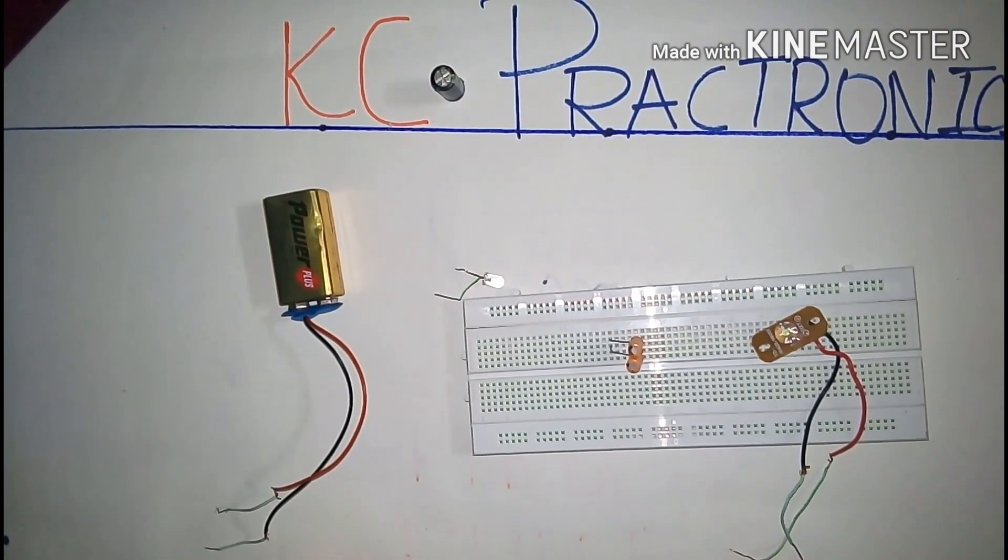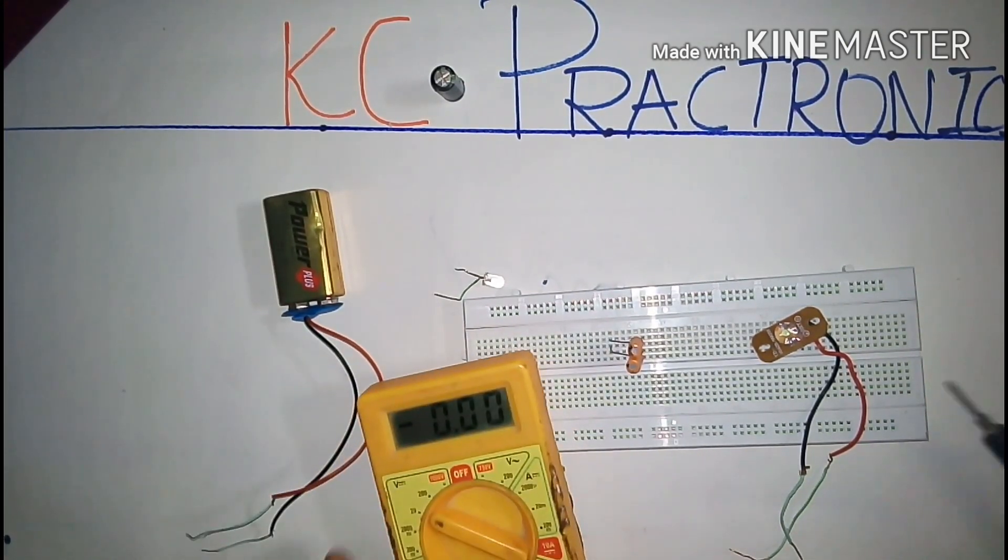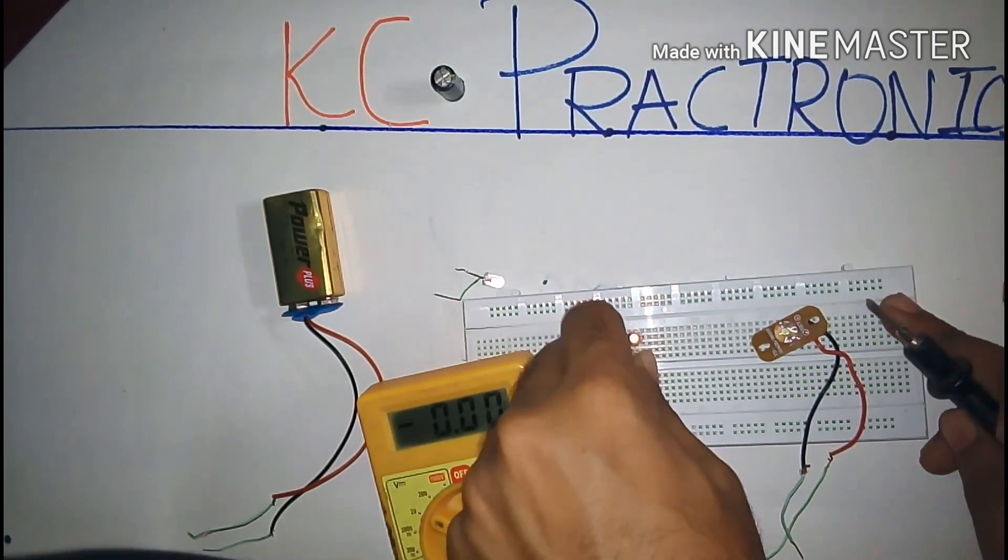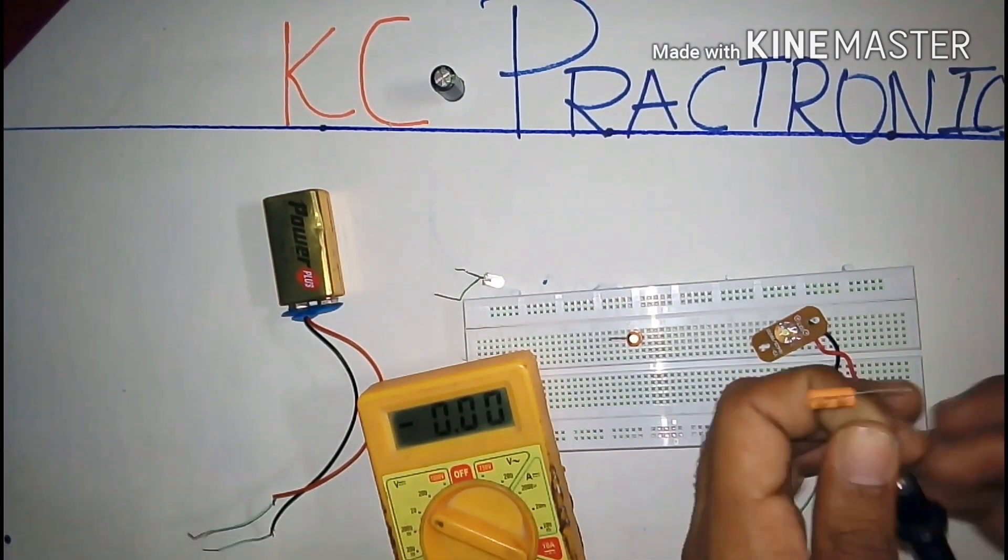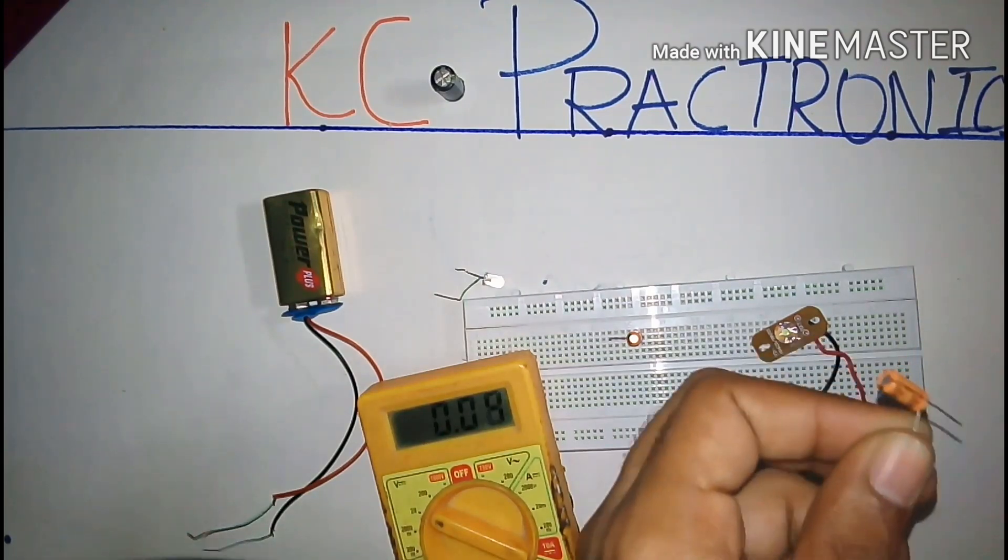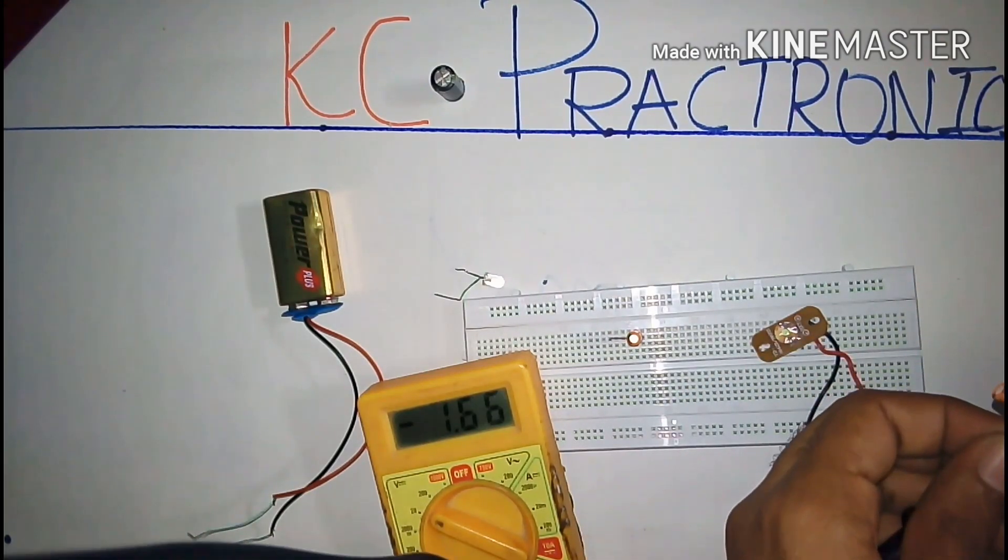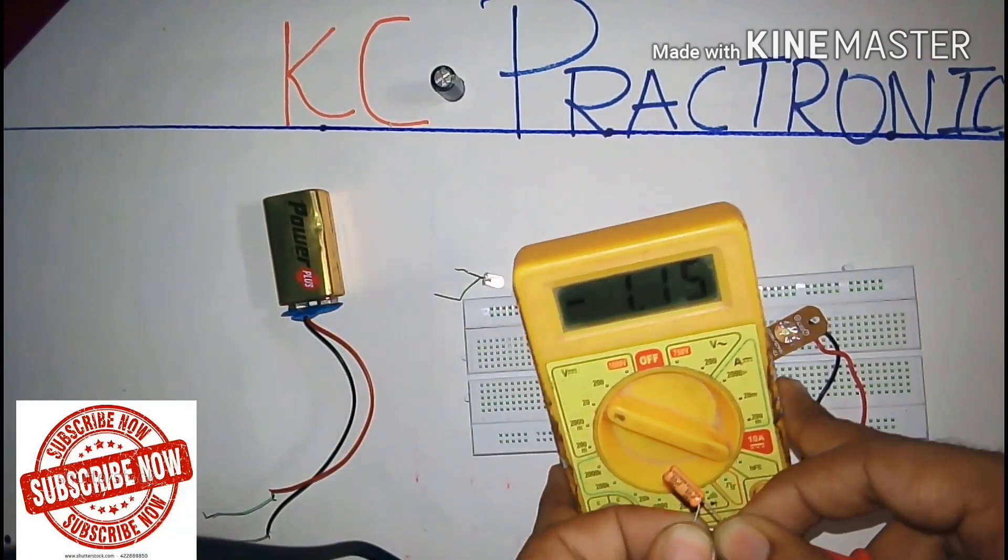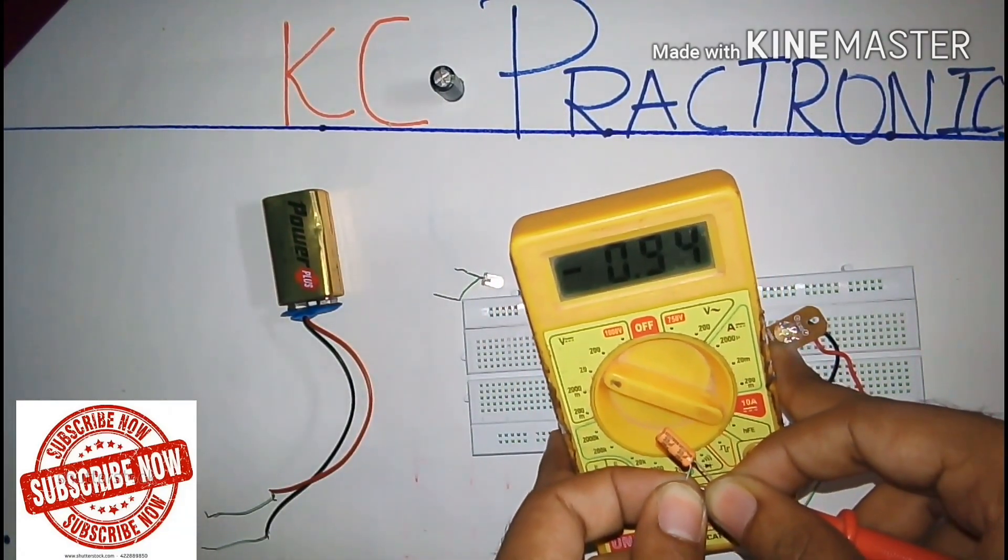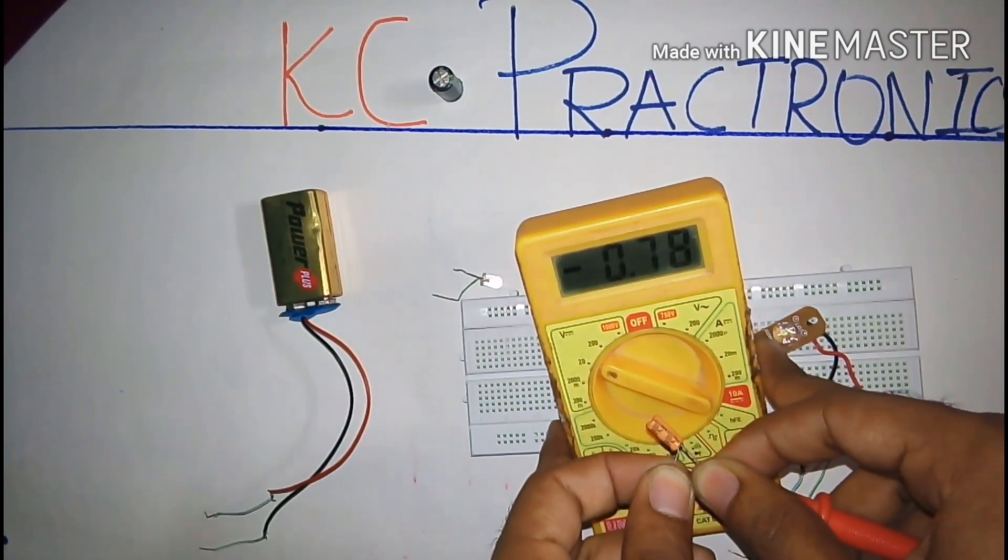We can even study the discharging property of a capacitor in a multimeter. Let the capacitor first be fully charged, and when we connect the capacitor to the multimeter, we can observe the discharging property. And you see here, in a multimeter, the voltage will be continuously decreasing. This is because of the discharging property of the capacitor.